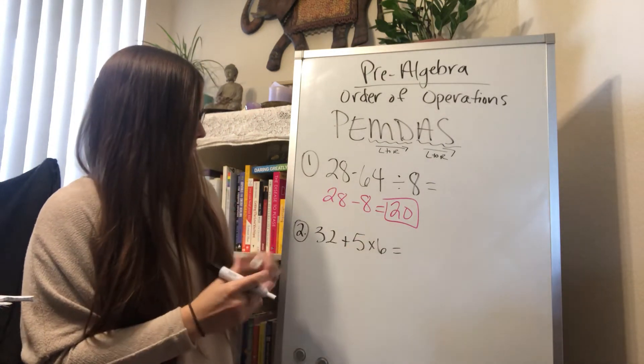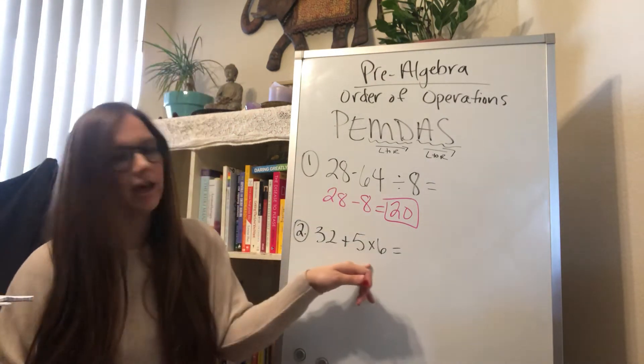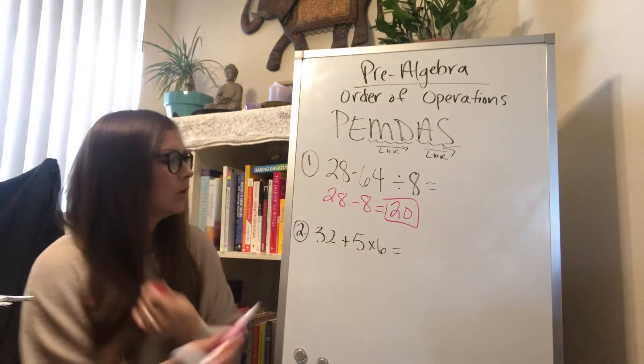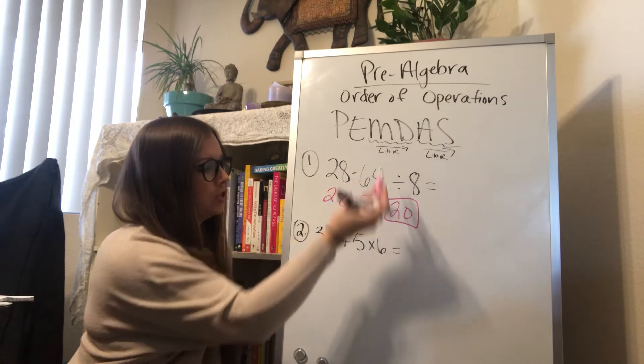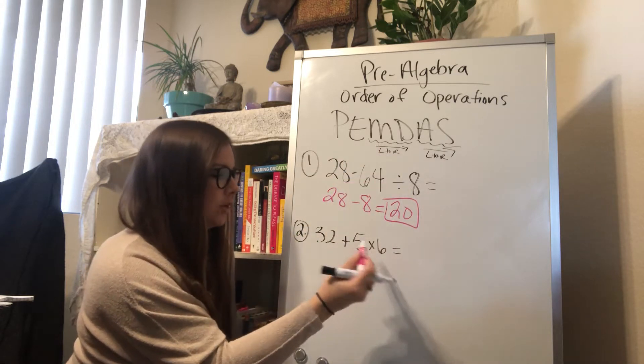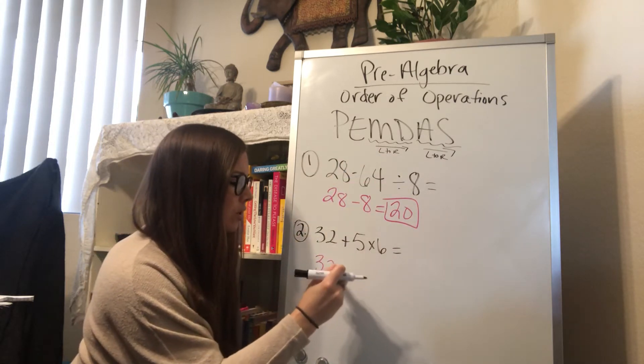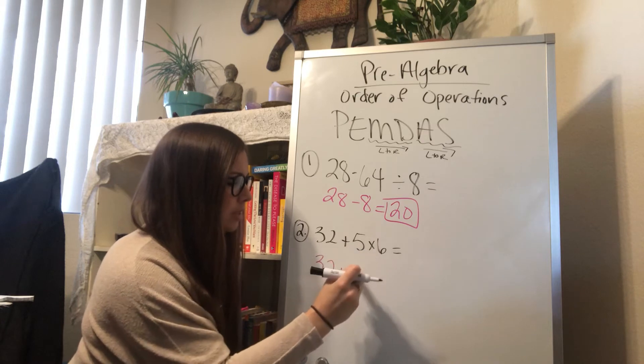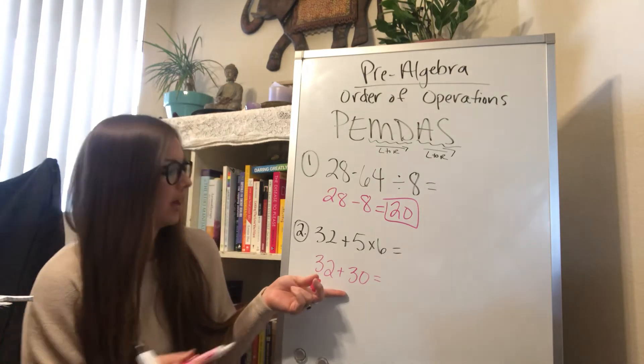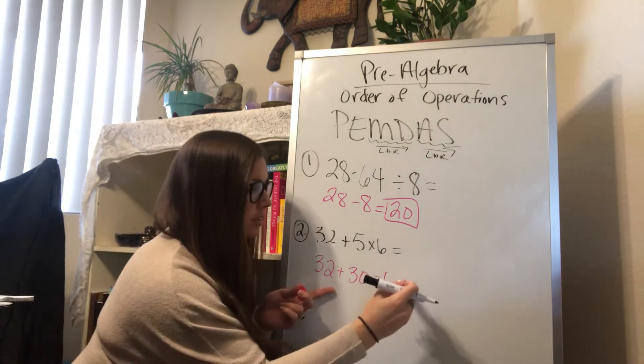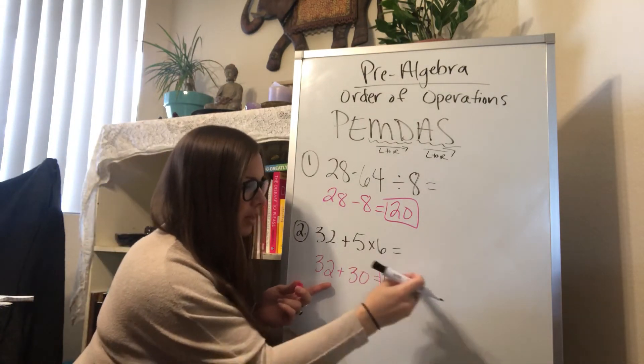So let's look at this one down here. 32 plus 5 times 6. So I check for parentheses, exponents, multiplication. Multiplication, I do that first. So I'll bring down my 32, and then 5 times 6 is 30. Now my only operation left to do is addition, so I'll do that. 32 plus 30 is 62. So that's my answer.